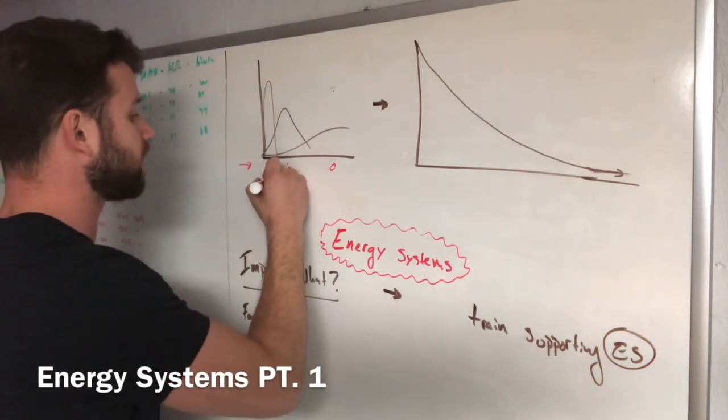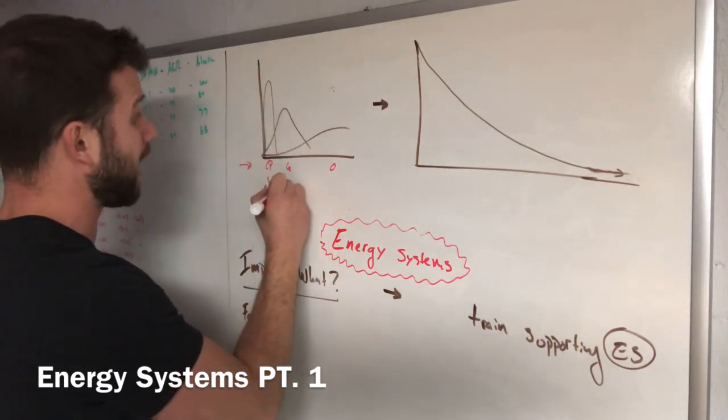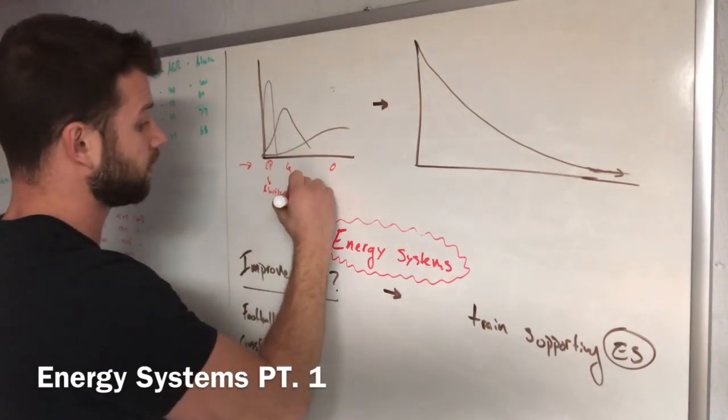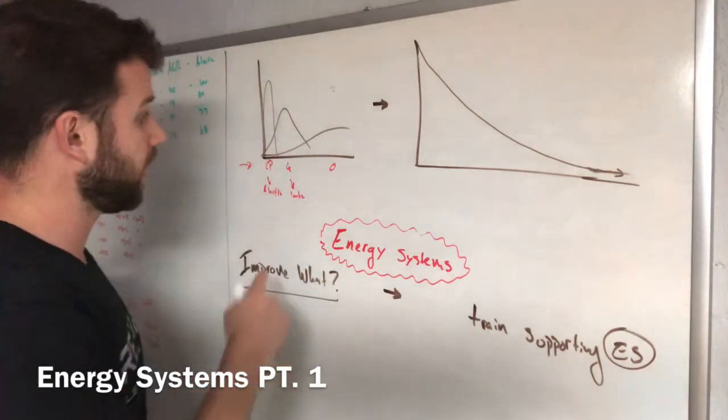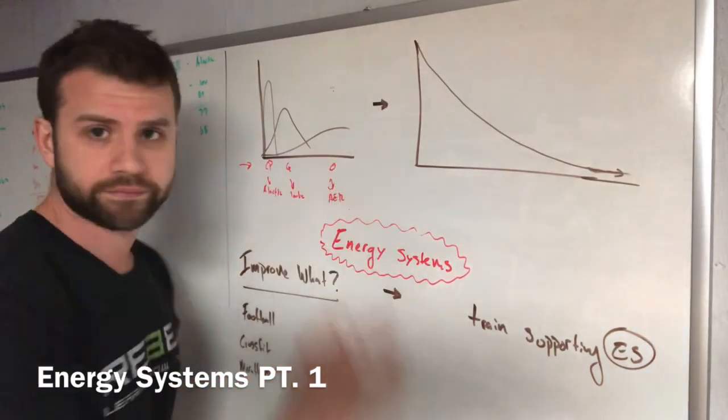A better way to designate these would be this is alactic, the high power one. The glycolytic one would be lactic, your lactic acid, your gross, right? And then over here, we're just going to call this aerobic.